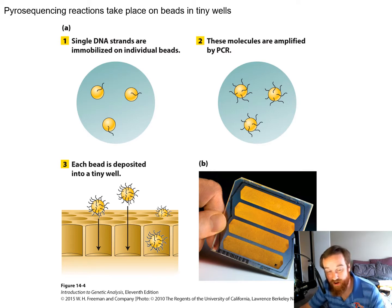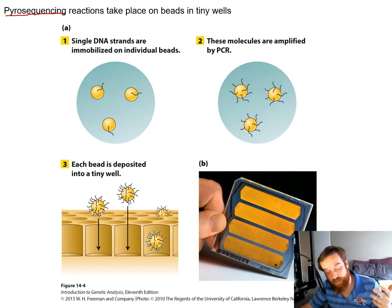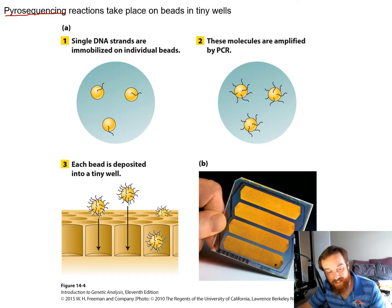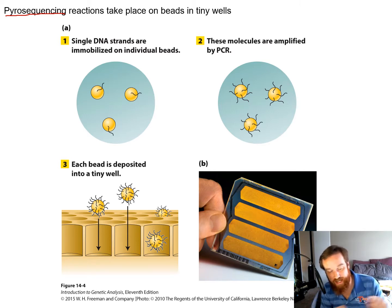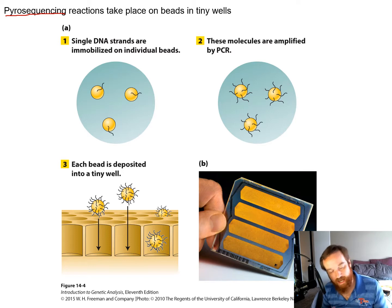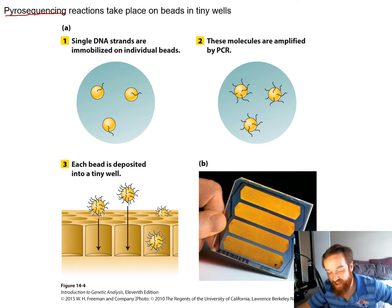Genomic technologies move very, very fast. At the time of this book, pyrosequencing was the technique discussed, but it is becoming less common. New genomic technologies are increasing read lengths from a few hundred base pairs to thousands of base pairs. Every time this class is taught the latest technology is different, but we'll use pyrosequencing as our example.